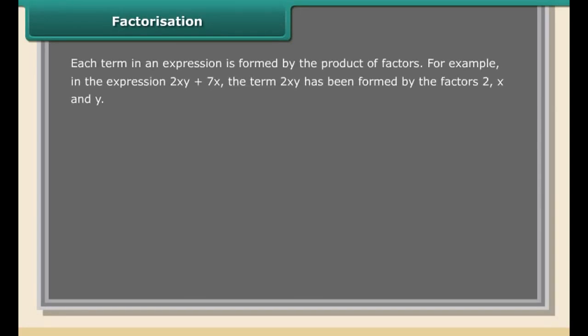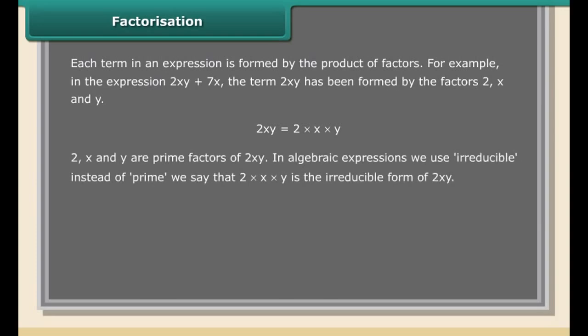Each term in an expression is formed by the product of factors. For example, in the expression 2xy + 7x, the term 2xy has been formed by the factors 2, x, and y — so 2xy = 2 × x × y. Here 2, x, and y are the prime factors of 2xy. In algebraic expressions, we use the term 'irreducible' instead of 'prime'.